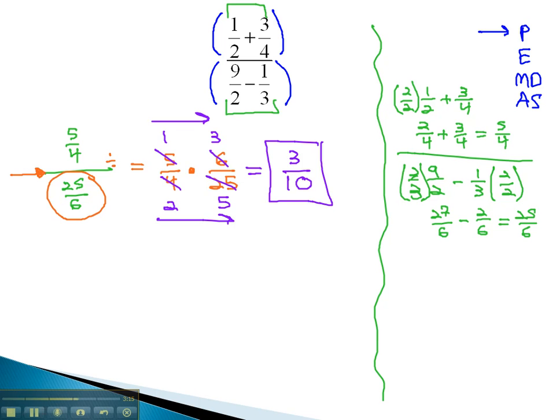But to summarize this problem we just finished, these complex fractions are fractions in fractions. Remember, we simplify the numerator and denominator separately, because of the invisible parentheses. And then, we remember that the fraction bar simply represents division, and we get our final solution.